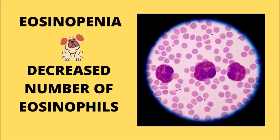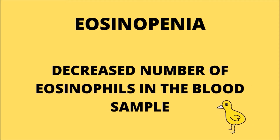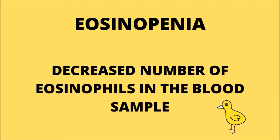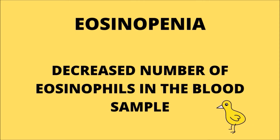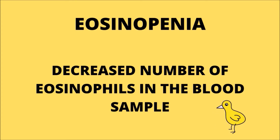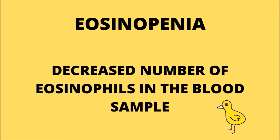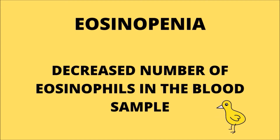You can diagnose eosinopenia when, after evaluating the complete blood count, you find that the pet is suffering from a decreased amount of eosinophils. Remember that lymphopenia needs to be present to be considered that the eosinopenia is real.